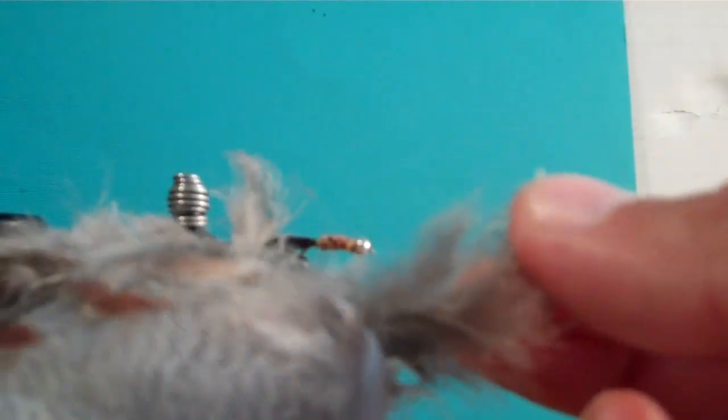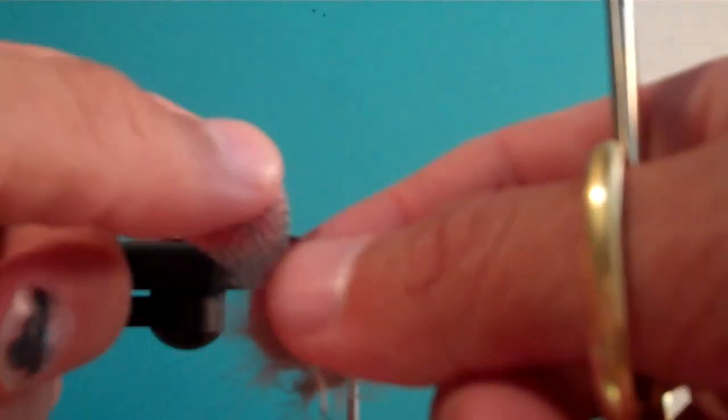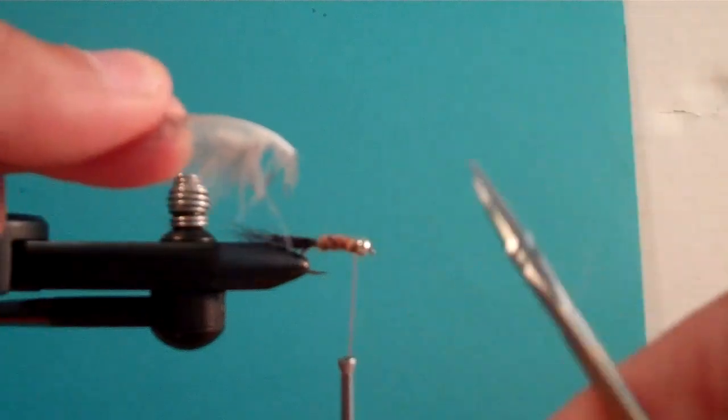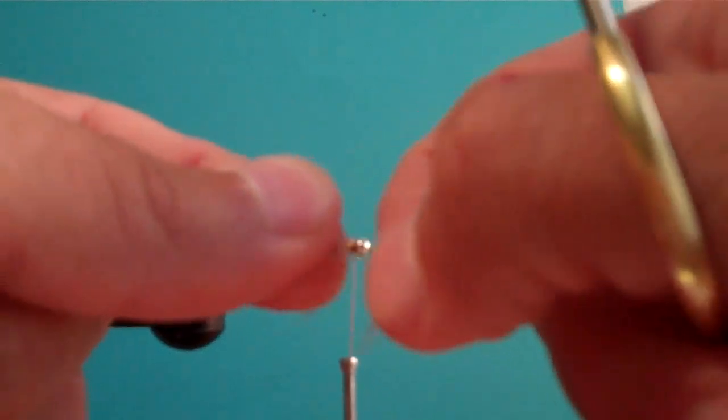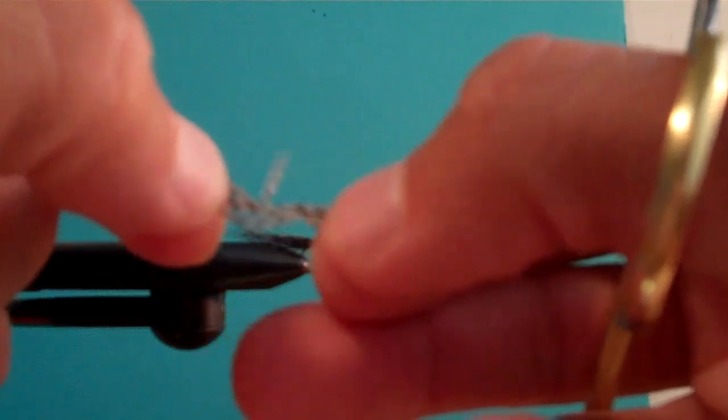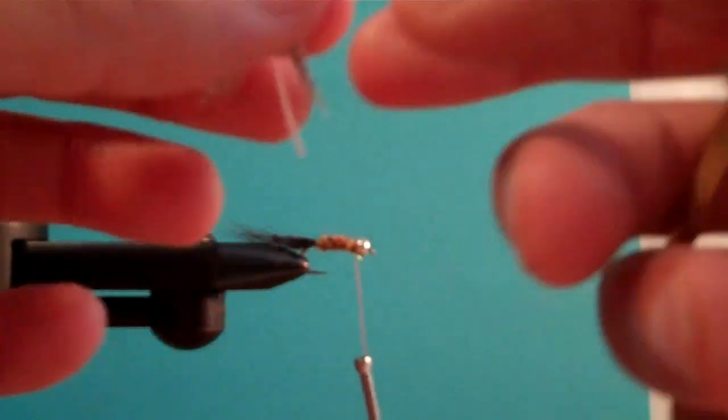Next, we're going to take Hungarian partridge. I got this at a fly shop probably ten years ago and I still have barely made a dent. I like this one. And to get these little pieces isolated, we're just going to peel off everything from back there. Pinch the tip and pull forward. That little piece I am pinching is what we are going to tie down.